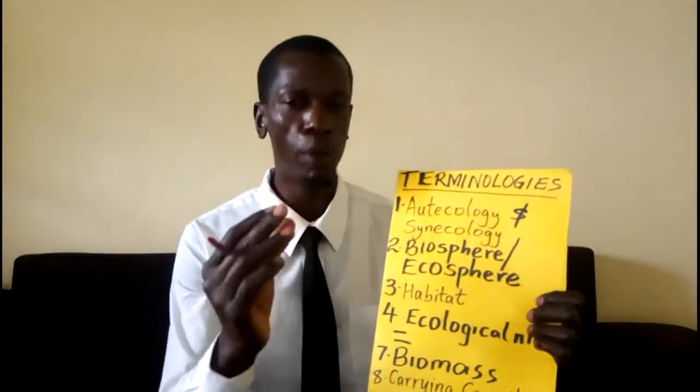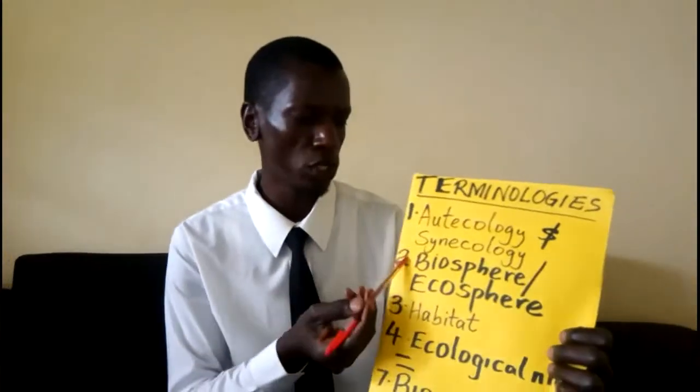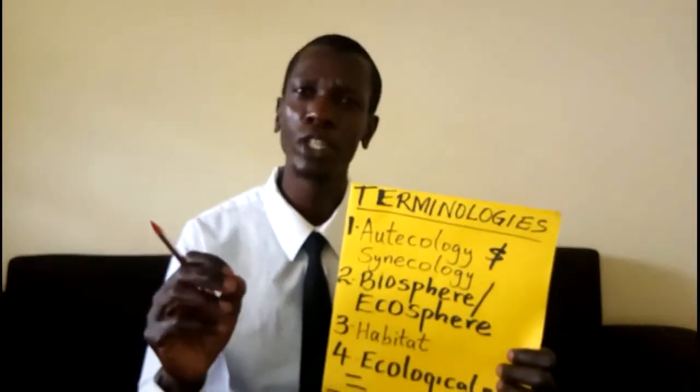When you go into the jungle and study a single species, for example Panthera leo — that is the lion — then we say that you are studying autecology. While when you study more than one — maybe Panthera leo the lion, Panthera tigris the tiger, and Panthera pardus the leopard — we say that you are handling synecology. Biosphere refers to any part of the earth or atmosphere which is occupied by living organisms, and may also be referred to as ecosphere.